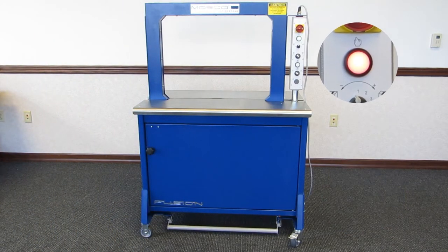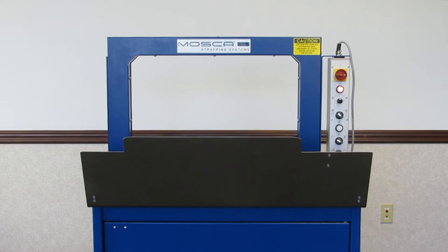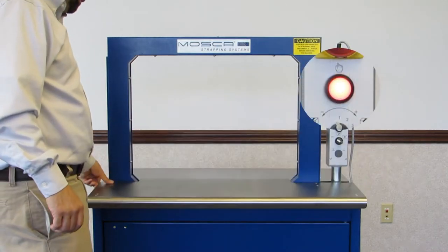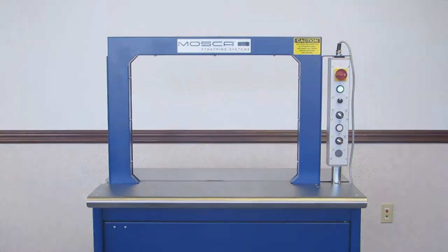And finally, if the indicator light is a steady red condition, this will indicate that a safety switch is open. Check to make sure all doors and tables are properly closed. Once all safety switches are closed, the indicator light will change from red to a steady green indicating the machine is ready to strap.